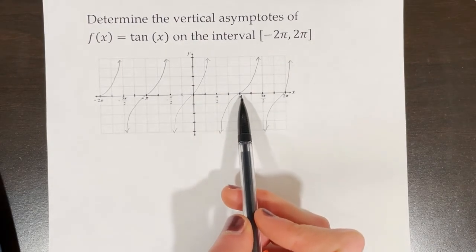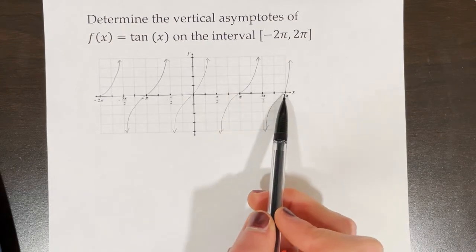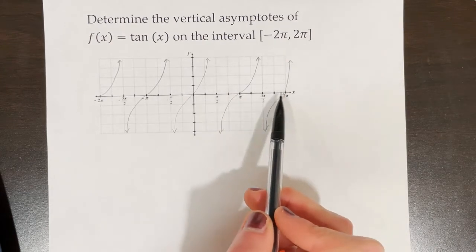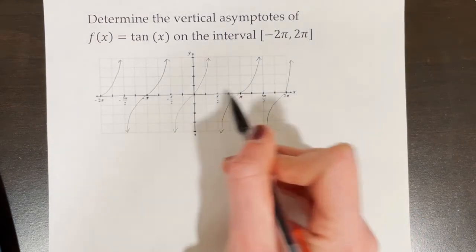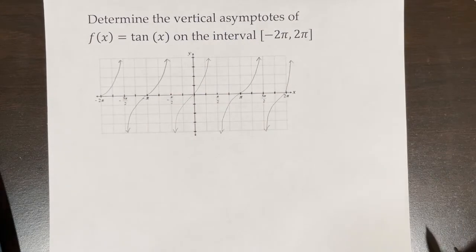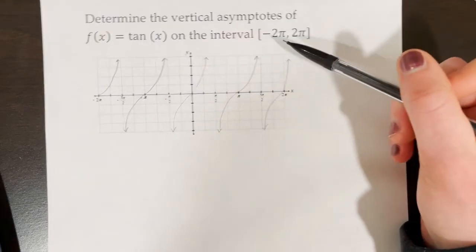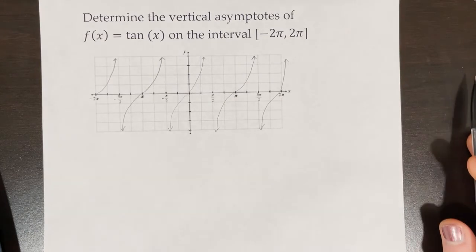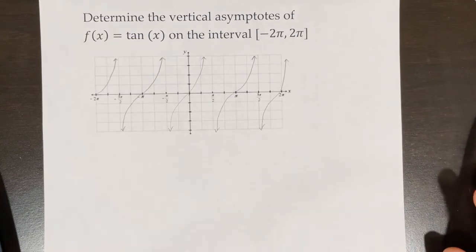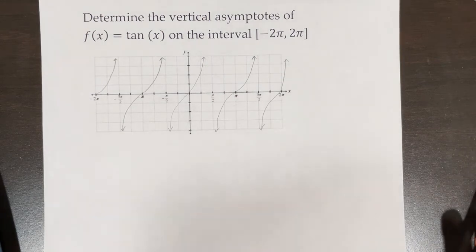It's very helpful to have your trig graphs memorized. You might notice there appear to be an infinite number of vertical asymptotes, since there is one at every π interval after π/2: at π/2, then π/2 + π = 3π/2, then 5π/2, and so on. All trigonometric functions are periodic, meaning they repeat over and over.